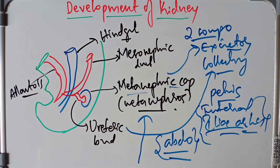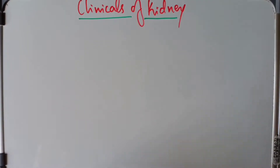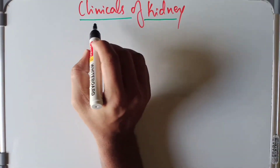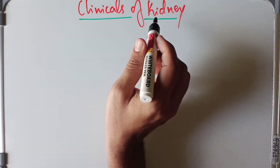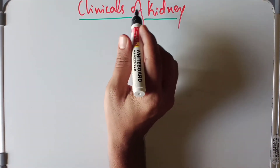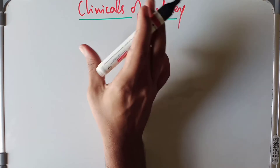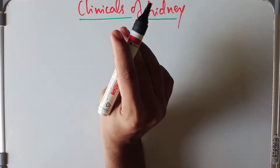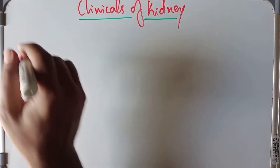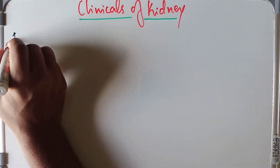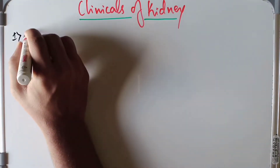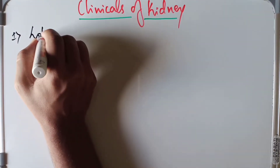We will also discuss the clinical significance of the kidneys. Stick to the video till the end, and if you are new here please make sure to subscribe. Now discussing the clinicals of the kidney — we have some common congenital anomalies. First, the lobulated kidney.